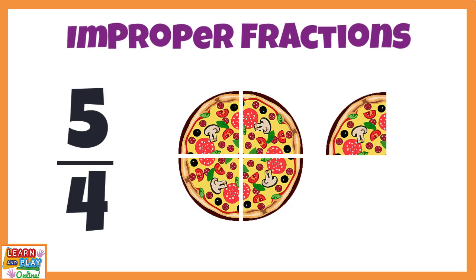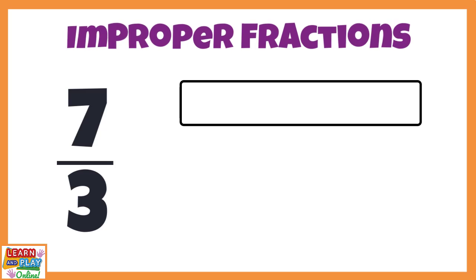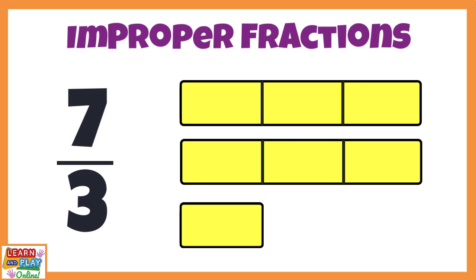Let's have a look at another improper fraction. Here is the improper fraction 7 thirds. We are going to use a rectangle to show a visual representation of what 7 thirds looks like. If we break it down, the denominator, 3, means that our whole rectangle was divided into thirds, giving us 3 equal parts. So each of these equal parts represents 1 third of the rectangle. The numerator, 7, tells us that we have 7 thirds. Right now in the picture, we only have 3 thirds. So let's add 4 more thirds to make 7 thirds. Now that we have 7 thirds showing, you can see that this improper fraction has a value that is greater than 1 because we have more than 1 whole rectangle. We actually have 2 whole rectangles and an extra third.